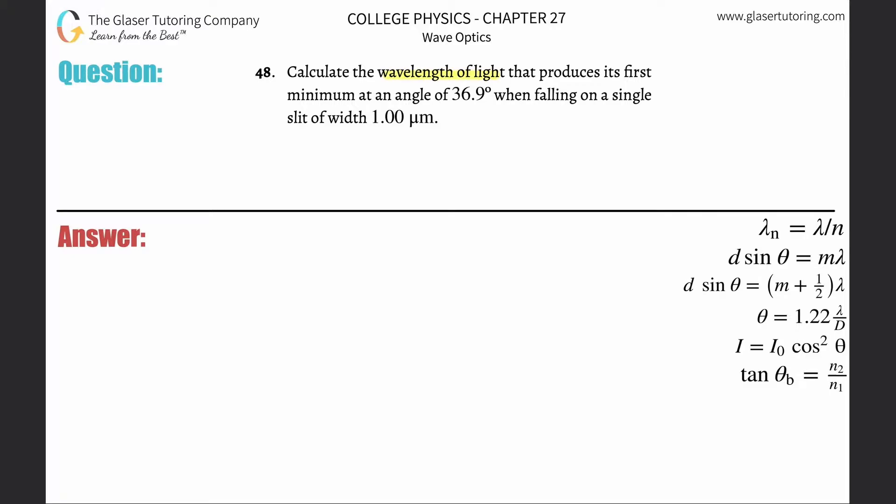Number 48. Calculate the wavelength of light that produces its first minimum at an angle of 36.9 degrees when falling on a single slit of width one micrometer.